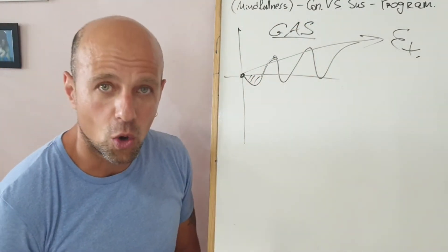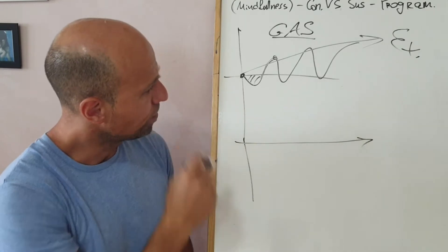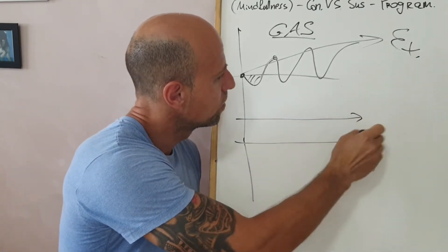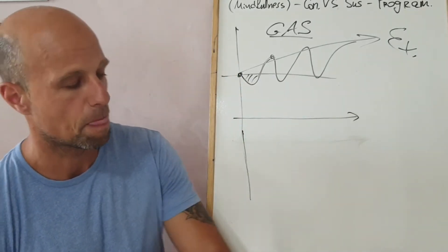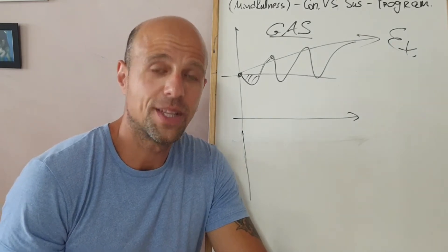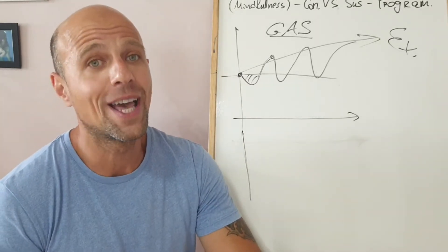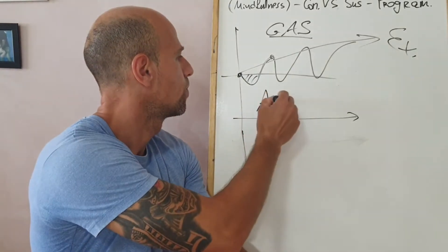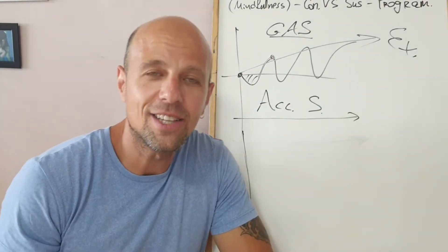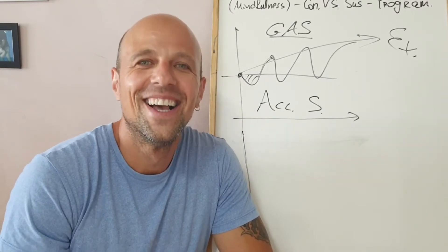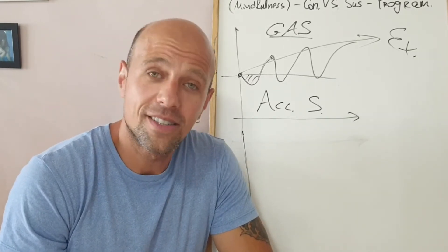So, here we go with the general adaptation syndrome. Another chart that is running very silently in the background is called ACS. Now, ACC, it's not air conditioning, although it's summer, at least here. It stands for accumulative.